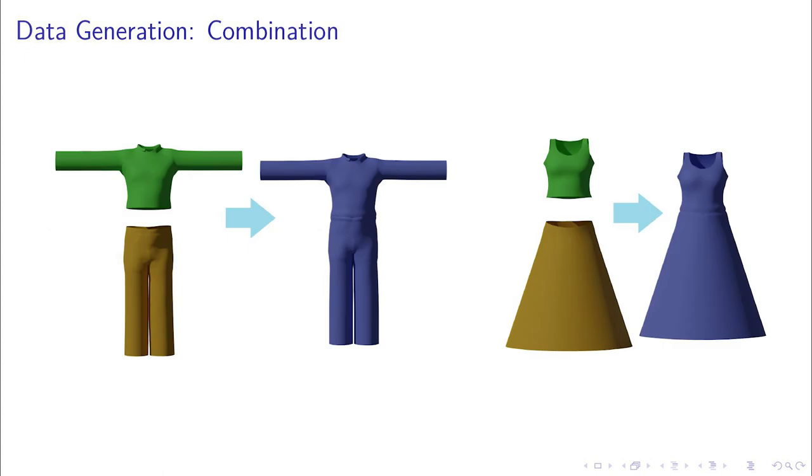An optional final step combines both upper and lower body garments into a single full body garment. If not, the outfit is composed of two garments.